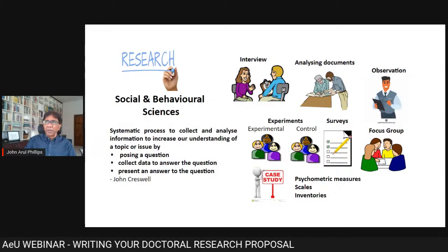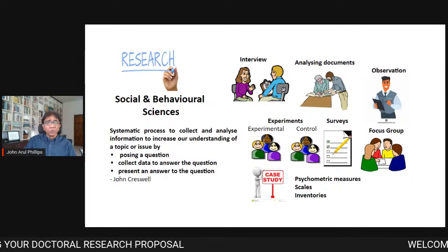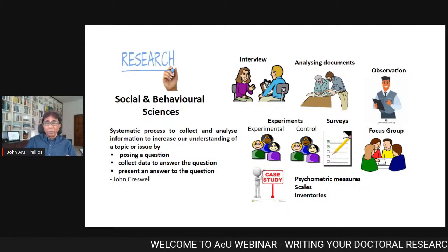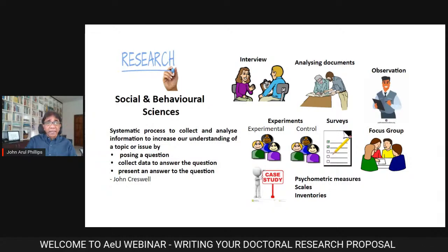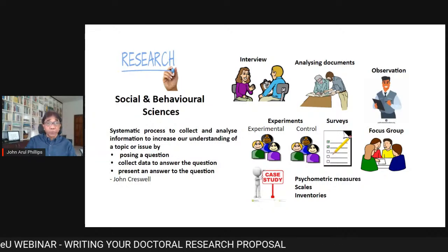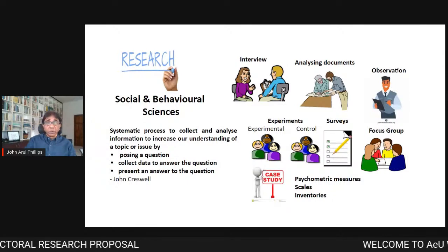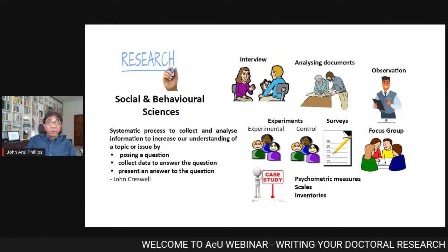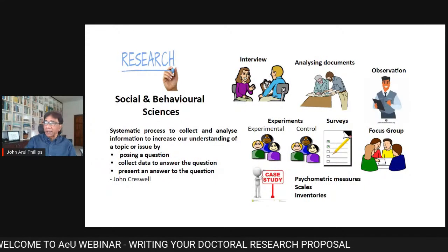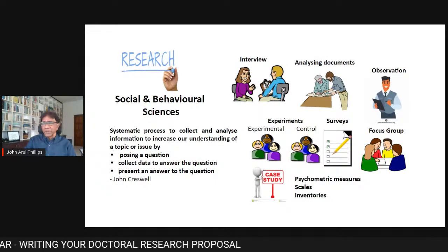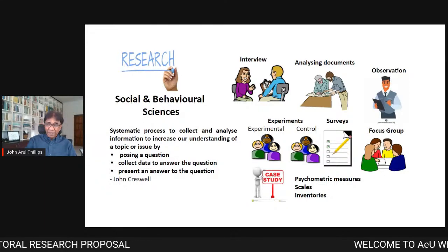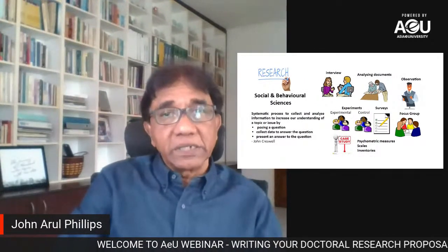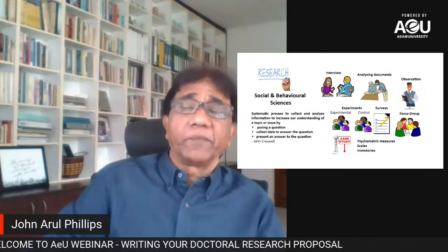In the behavioral and social sciences, we use a variety of quantitative methods — interviews, surveys, experiments, focus groups, observations, and document analysis. We use an assortment of instruments: questionnaires, psychometric measures, different kinds of scales, and inventories. Basically, in the behavioral and social sciences, we are trying to measure the human condition.